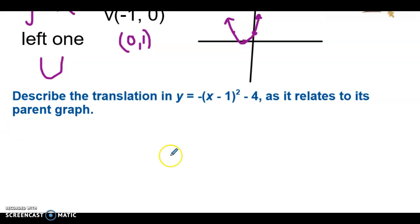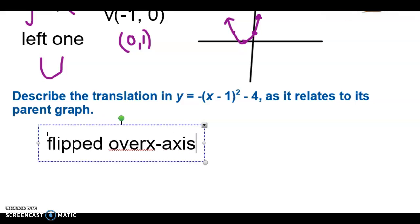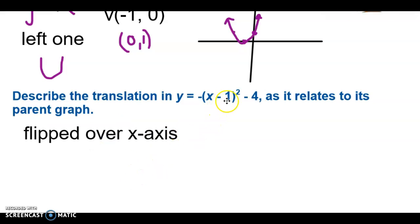Next one. What's happening here? We want the translations going on. Well, that negative sign means that it is going to be flipped over the x-axis because you're going to turn it upside down. We need space here. All right. With a negative one inside, we do the opposite of negative. So we go right one. And then we have a minus four at the end. We do exactly the same sign as that. So we go down four. So these are all the translations that are happening or the transformations, either word.